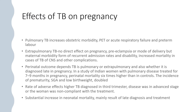Pulmonary TB increases obstetric morbidity including pre-eclampsia, acute respiratory failure, and preterm labour. Extrapulmonary TB has no direct effect on pre-eclampsia or mode of delivery, but maternal morbidity — in the form of recurrent admissions and disability — is increased. Increased mortality occurs with TB of the central nervous system and other complications. Perinatal outcome depends on whether TB is pulmonary or extrapulmonary and whether it is diagnosed late in pregnancy. In a study of Indian women with pulmonary disease treated for seven to nine months in pregnancy, perinatal mortality was six times higher than in the control group. The incidence of prematurity, small for gestational age, and low birth weight is doubled.